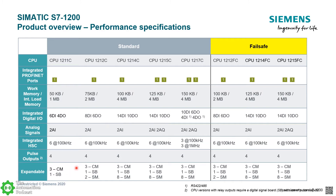The expansion capabilities also change between models. With the 1211, you're limited to the integrated IO plus communication expansion — up to three communication modules to the left. With the 1212, you get up to two signal modules plus the three communication modules and the signal board. With the 1214 and up, you can expand up to eight local IO modules, and all models support distributed IO up to 16 PROFINET IO devices.